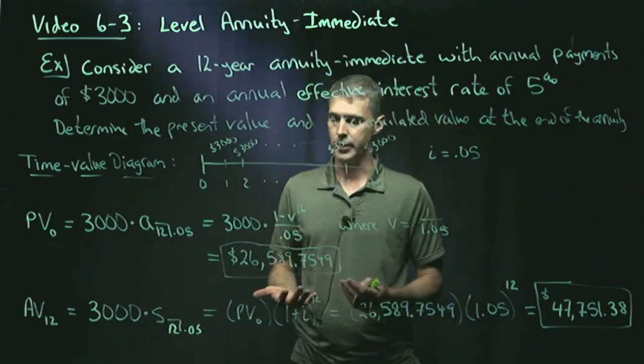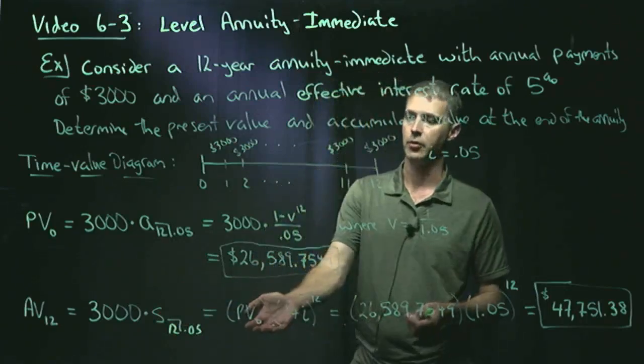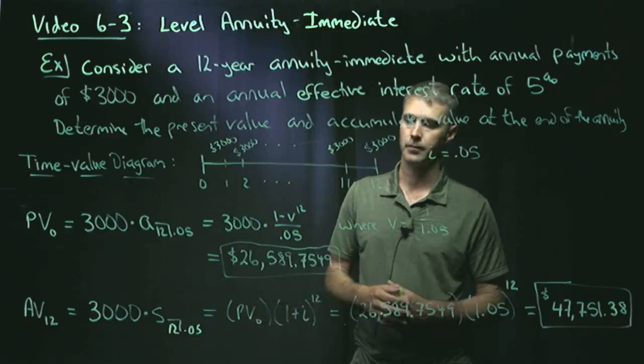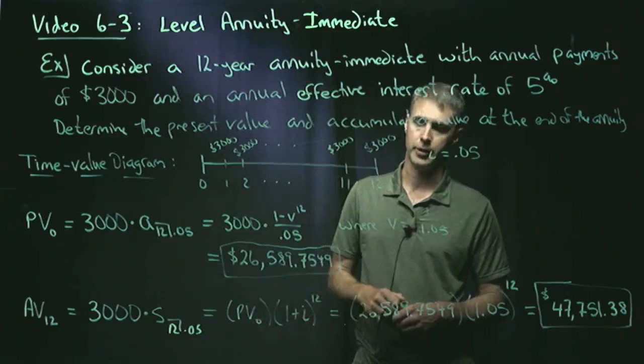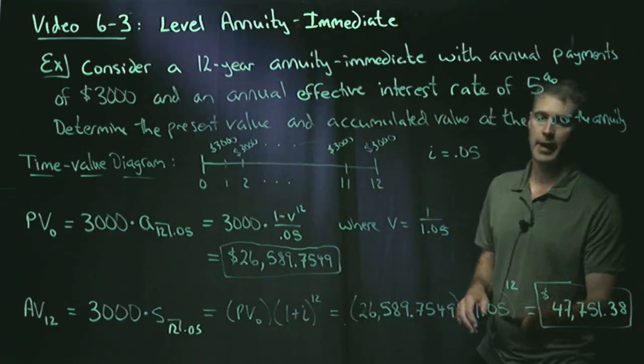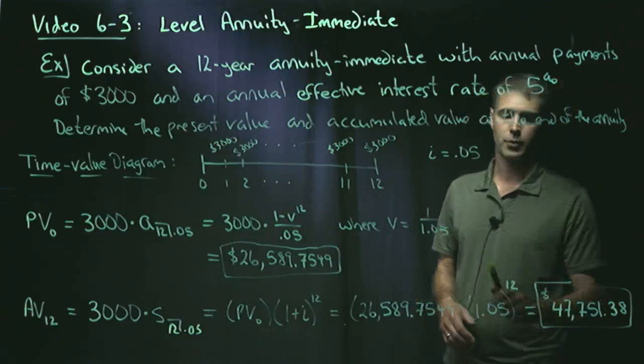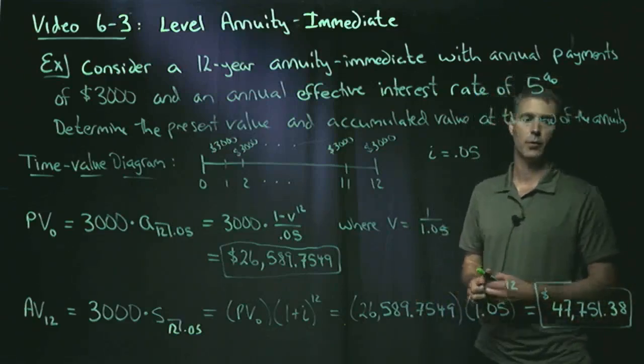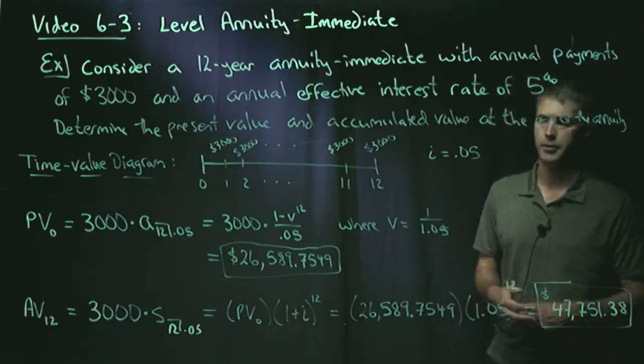So the easiest way to do this is to take your present value and just push it forward. So I'm going to take the present value and push it forward 12 periods. My present value is that 26,000 number. My I was 0.05. Push forward 12 periods. I get $47,751.38 rounded to the nearest penny.